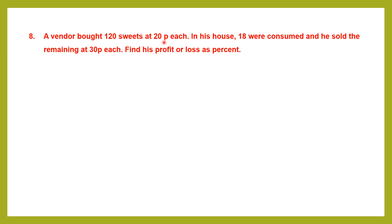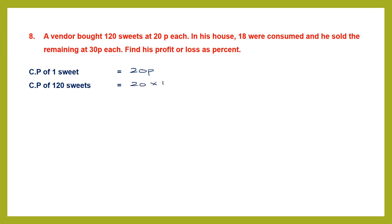Question 8. A vendor bought 120 sweets at 20 rupees each — this is the cost price. So cost price of 1 sweet is 20 rupees. Let's find the cost price of 120 sweets: 20 rupees into 120 sweets. 12 twos are 24, and then two zeros, so that's 2400 paise. Converting to rupees by dividing by 100, that gives 24 rupees. So the total cost price is 24 rupees.